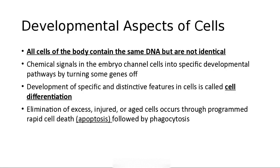Developmental aspects: all cells of the body contain the same DNA, but they're not all identical. There are triggers that turn on and off certain genes — most of which we don't know about — which cause cell differentiation, so your toe looks like a toe and your nose looks like a nose. We eliminate older age cells through programmed cell death, called apoptosis, and then they're phagocytized.